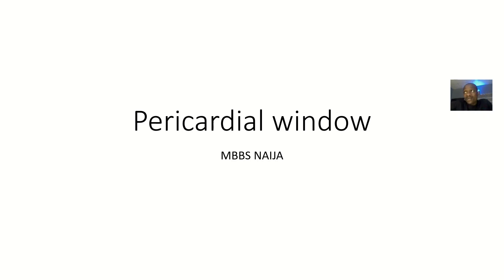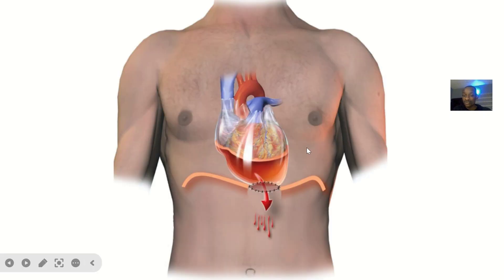Talking about the concept of pericardial window — pericardial window is more like, let's say you have pericardial effusion. This pericardial effusion is now going to cardiac tamponade, like there's compression of the heart, everything is becoming abnormal. And you want to relieve the patient. We spoke about pericardiocentesis, where you're actually putting a needle into that sac, the pericardium surrounding the heart where there's accumulation of fluid, to aspirate some of the fluid.